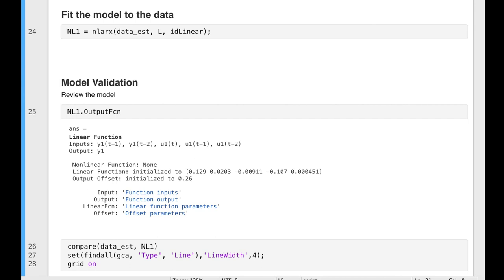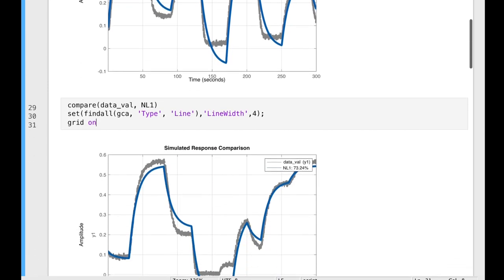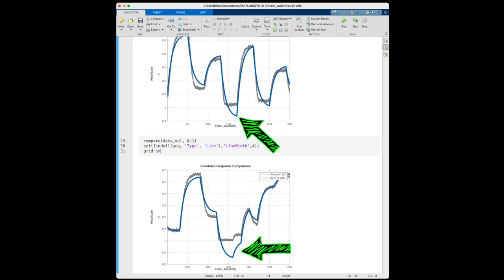Now we can use the compare function to check how well this model does against the real data. It actually doesn't look too bad. It has a fit of 76%, and it looks decent. We can check the model against the validation data, and once again, it's close-ish. There are these points in the middle, in both cases, where the tank height drops below 0 meters, which we know physically can't happen. But otherwise, the dynamic behavior in both is pretty good.